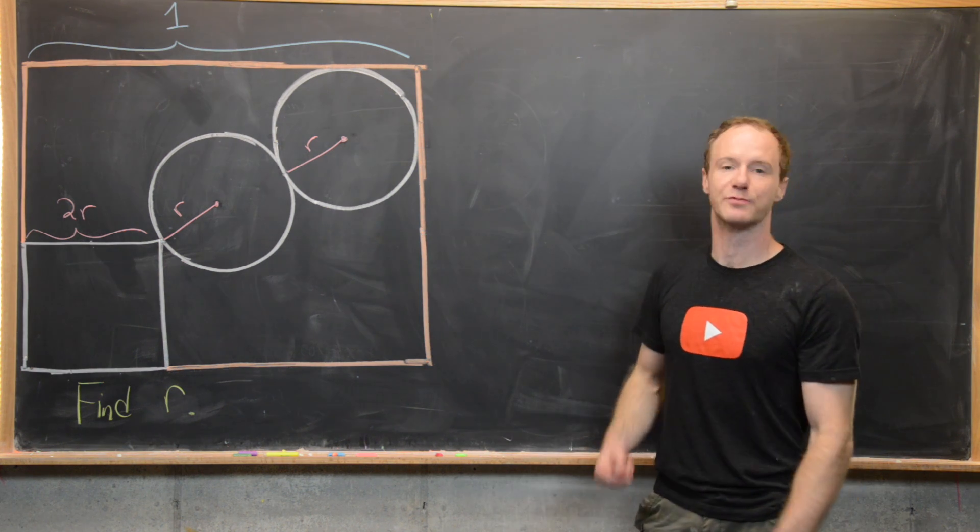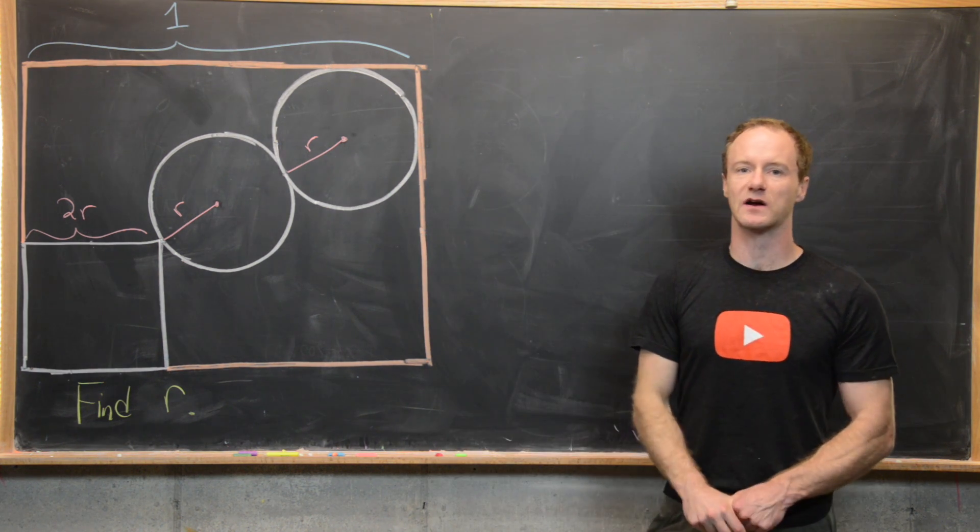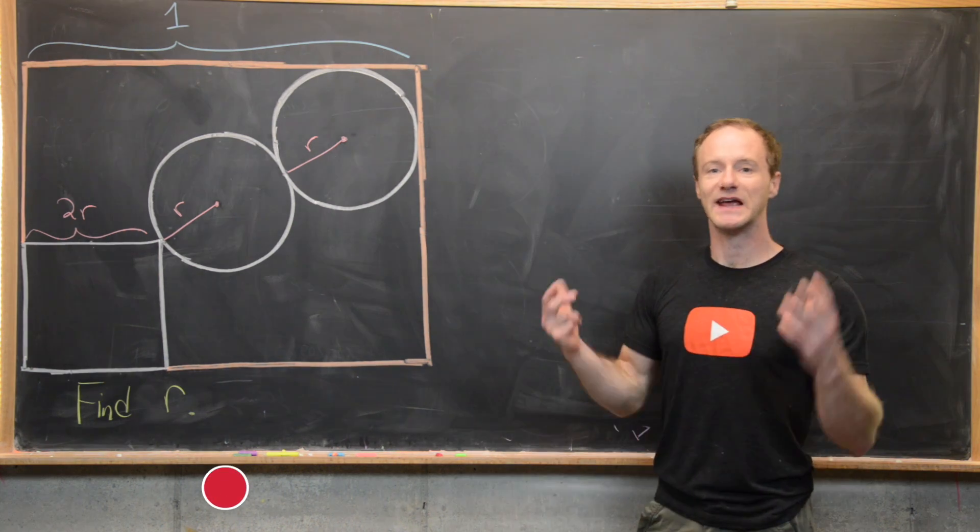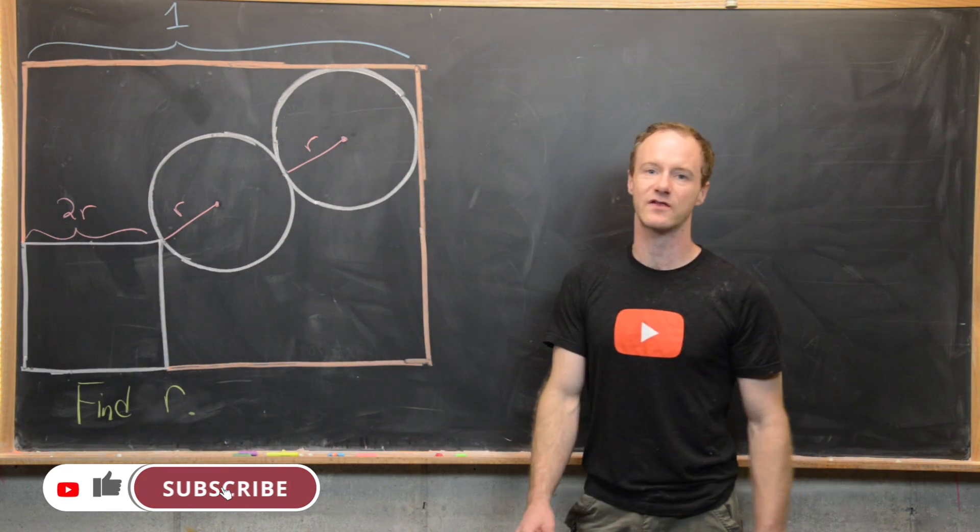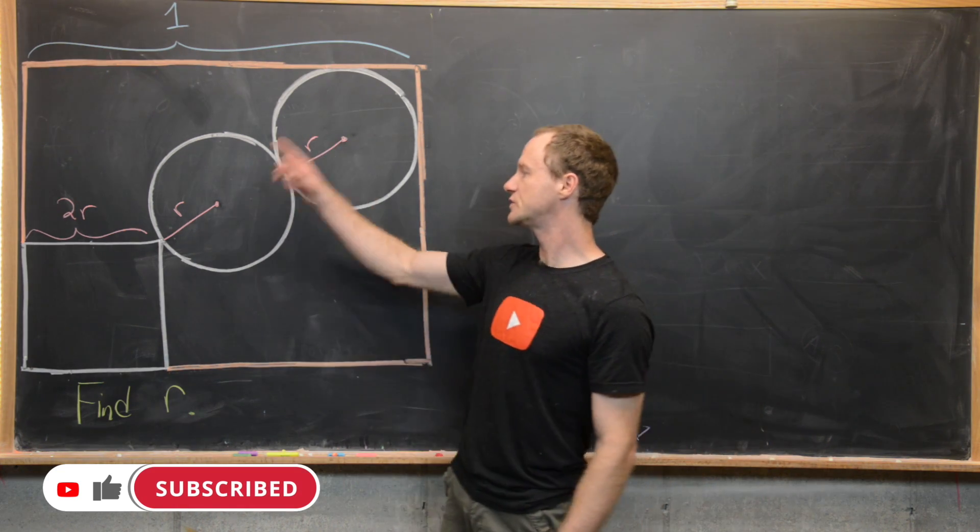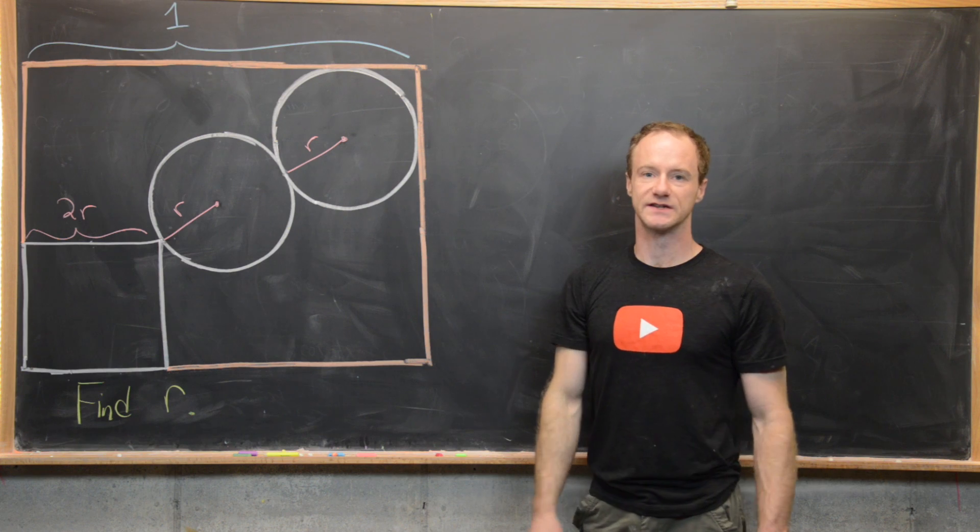Here we're going to look at a nice and quick geometry problem. Okay, so here's the setup. We've got this large square of side length 1, and inside this large square we have a small square with side length 2r and two circles with radius r, and those are diagonally oriented.